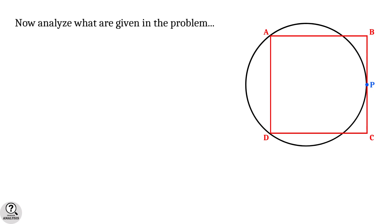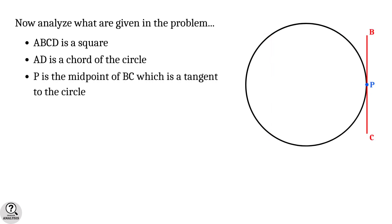Now let's analyze what is given in the problem. First of all, ABCD is a square. Secondly, the side AD is a chord of the circle. And finally, P is the midpoint of BC, which is a tangent to the circle. Now what exactly is our aim of this problem? It is to find which one has the larger perimeter.